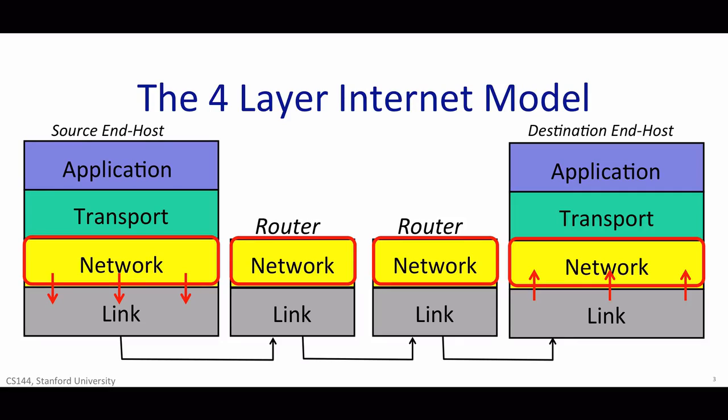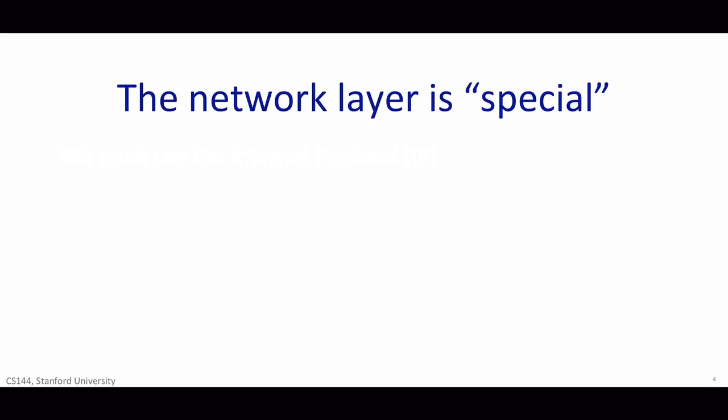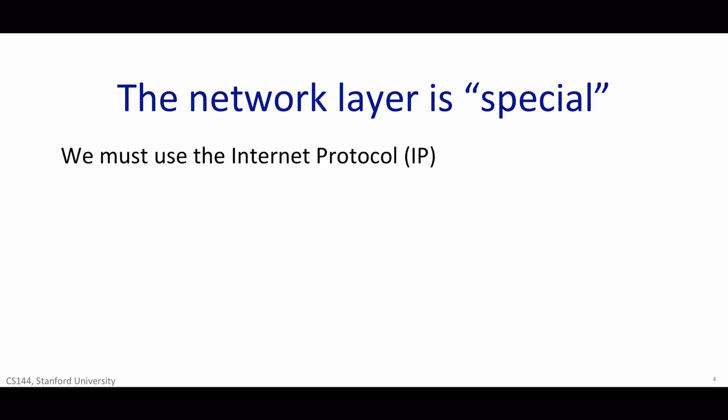It also means that a single network layer has a common way to talk to many different link layers by simply handing them datagrams to send. This separation of concerns is made possible by the modularity of each layer and a common, well-defined API to the layer below. In the Internet, the network layer is special. When we send packets into the Internet, we must use the Internet Protocol. It is the Internet Protocol, or IP, that holds the Internet together. We'll learn more about the details of IP in later videos, but for now it's good to know some basic facts about IP.